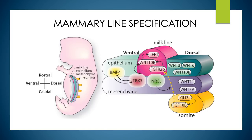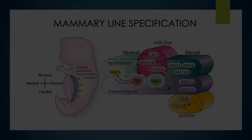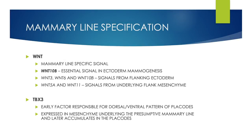In turn, the epithelium influences mesenchymal maturation such that the mammary mesenchyme condenses to form a few layers of fibroblast-rich cells closely surrounding the epithelial rudiment, distinct from the fat-pad precursor mesenchyme, which develops from more deeply located subcutaneous mesenchymal cells. There are several key players in mammary line specification. WNT is a mammary line-specific signal; WNT-10b is essential in ectoderm mammogenesis. WNT-3, WNT-6, and WNT-10b are signals from flanking ectoderm, while WNT-5a and WNT-11 are signals from underlying flank mesenchyme.